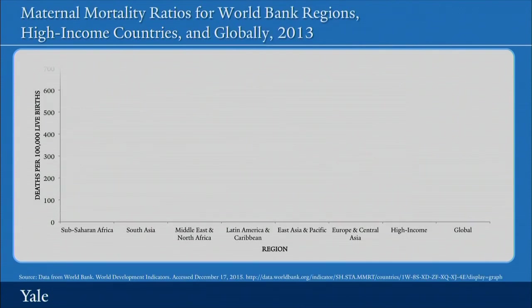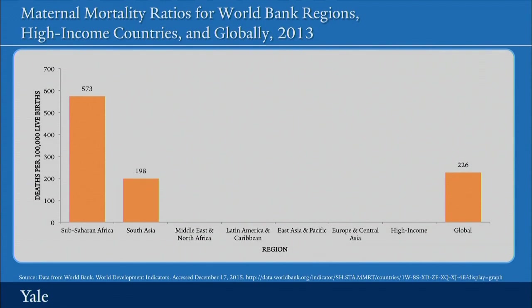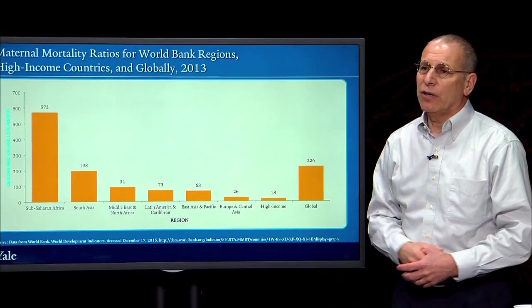Let's look now at the maternal mortality ratio. Emily, what are the most important takeaway messages from this graphic showing maternal mortality ratios for World Bank regions and high-income countries for the year 2013? We can see that there's a huge disparity between high-income countries and sub-Saharan Africa, which is suffering the most, and South Asia is also not doing well.